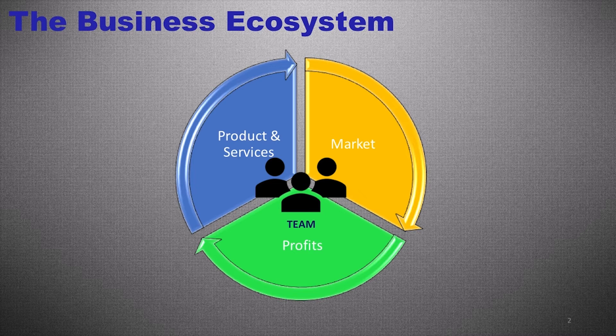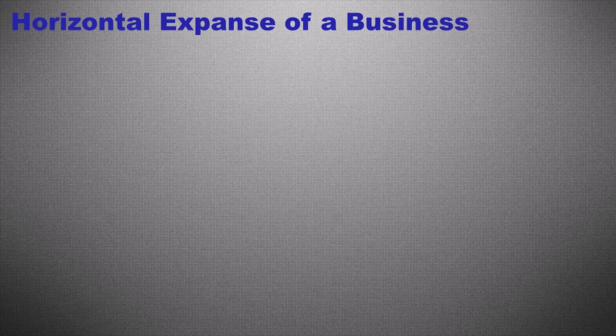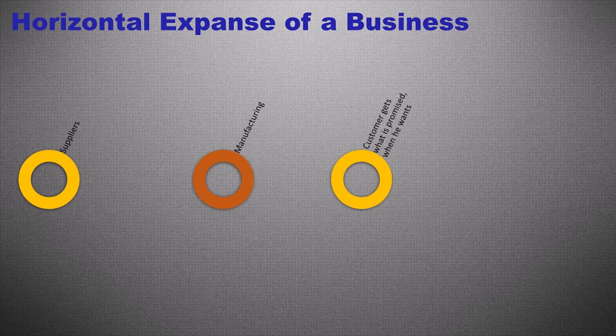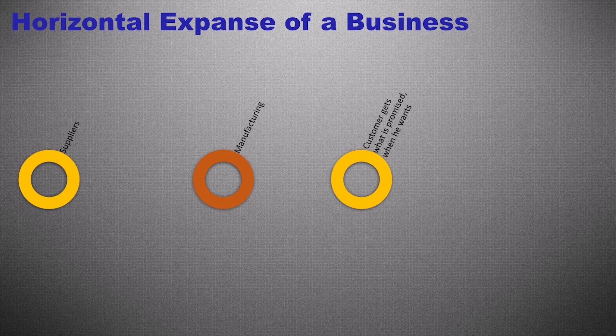Let's have a look at the spread of activities of this team through which it generates value and thus profits. I will be frequently using the term 'team' to address everyone involved in the business activity relevant to the discussion. The horizontal expanse or first dimension spreads from the suppliers of raw materials or components through manufacturing or processing to customer or end user.